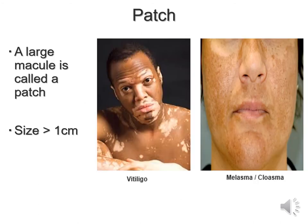Patches are a larger macule, typically greater than 1cm. Examples include vitiligo, chloasma, or melasma — typically referred to as the mask of pregnancy. During pregnancy, hormonal changes may alter the pigmentation of the skin. Typically it does fade after the pregnancy is over and the child has been delivered, but it usually takes some time.